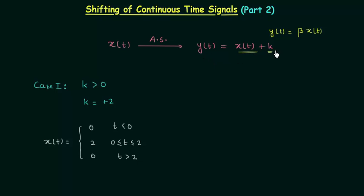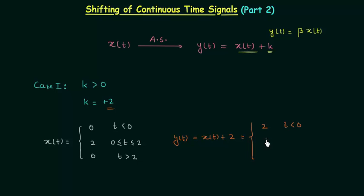The new signal yt is equal to xt plus k, so yt equals xt plus 2 since k equals 2. We can easily find the new signal yt: it is 0 plus 2 equals 0 when t is less than 0; it is 2 plus 2 equals 4 when 0 is less than or equal to t and t is less than or equal to 2; and yt is equal to 0 plus 2 equals 2 when t is greater than 2.